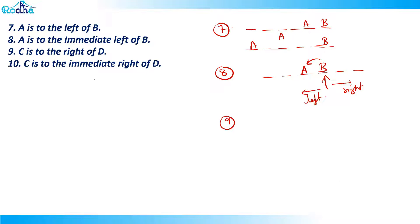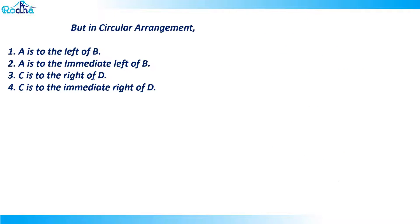The ninth one: C is to the right of D — same concept. If I place D here, C can be anywhere to the right of D. But the tenth statement: C is to the immediate right of D — so if D is here, C is immediately to its right. That covers linear arrangement. Now, in circular arrangement, 'A is to the left of B' and 'A is to the immediate left of B' have the same meaning.